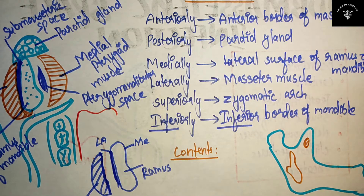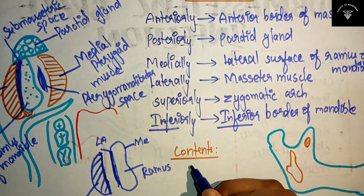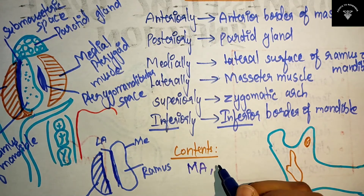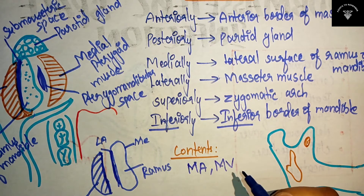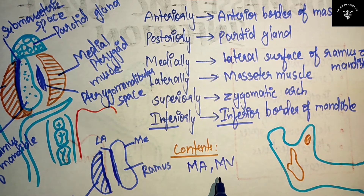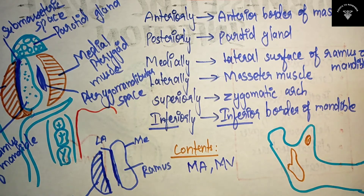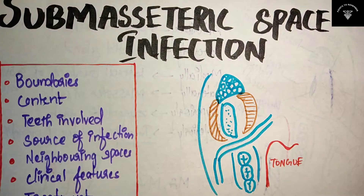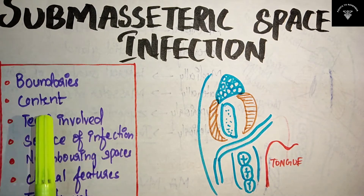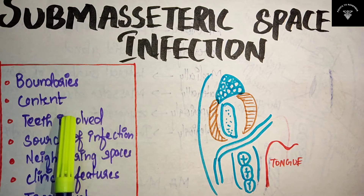What are the contents? The contents of submasseteric space are simple — that is the masseteric artery and masseteric vein. These are the two contents of the submasseteric space. We have now covered the boundaries and the contents of submasseteric space.